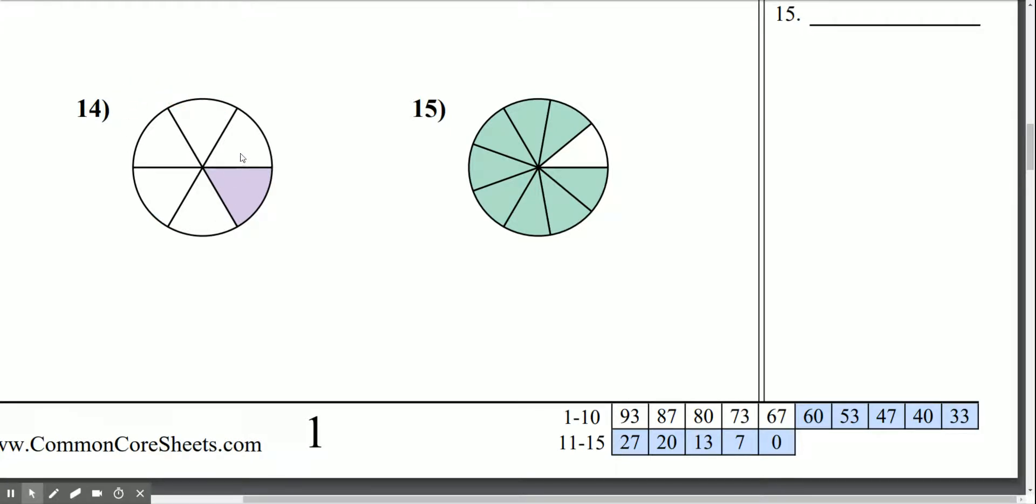This circle is broken up into 6. If I want to find out what the angle of one-sixth is, I'm going to take 360 degrees and divide by 6, because that circle is broken into 6 pieces.